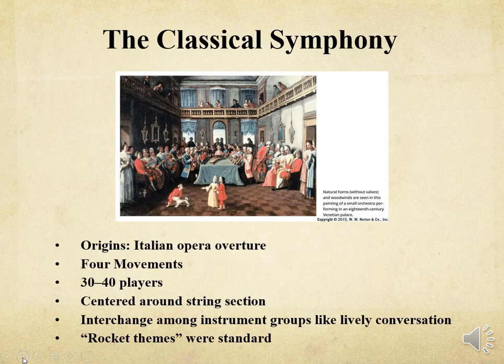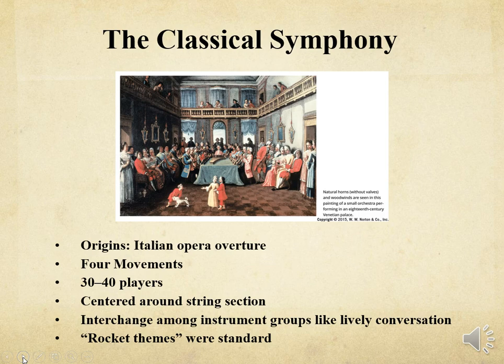The symphony was a principal instrumental form of the classical era. Its roots are in the Italian opera overture, an orchestral piece in three-part form: fast, slow, fast. Eventually these parts became separate movements to which different effects were added. Rocket themes, characterized by a quick rise from low to high register, and steamroller effects, which are long drawn-out crescendos, became standard in the classical symphony. These effects are attributed mostly to composers active in Mannheim, a German city along the Rhine River. This group, known as the Mannheim School, also added a minuet and trio movement, making the symphony a four-movement form that paralleled the form of the string quartet.